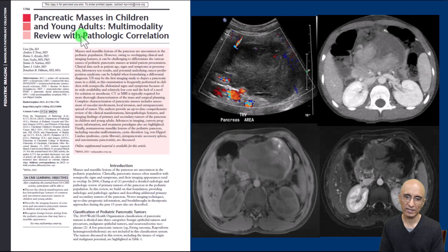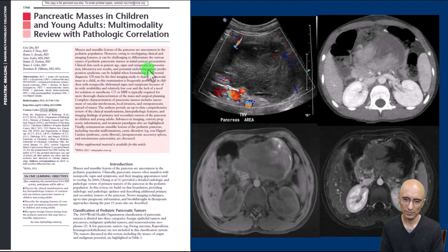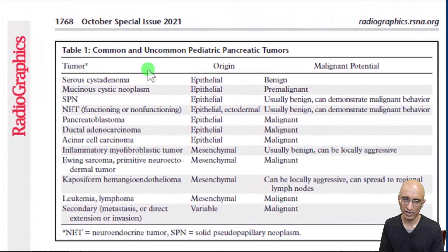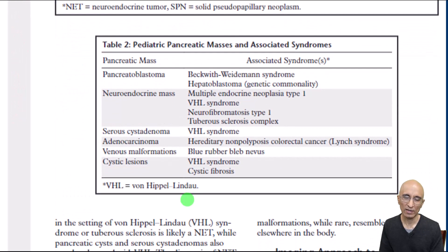This is an excellent reference article from Radiographics on pancreatic masses in children and young adults. As you can see there is a wide differential diagnosis for pancreatic lesions in children. Whenever dealing with pancreatic lesions in children or adults it is important to make sure there is no underlying syndromic disorder. Our patient did not have any known medical illness.